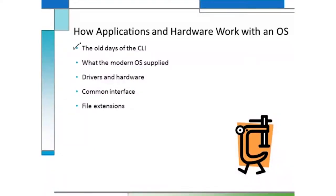I want to talk first a little bit about the history, just to make sure we're clear about the importance of an operating system. In the old days — and even today — the operating system is supposed to be a way of interacting between you, the user, and the hardware, like maybe a printer that's connected to your computer.